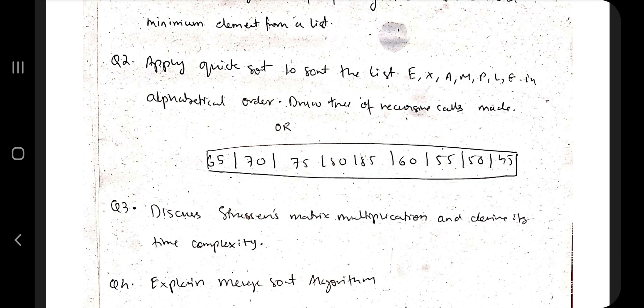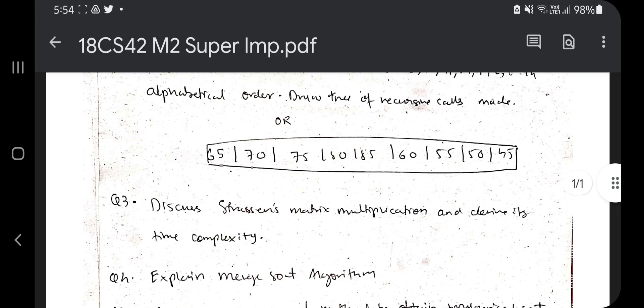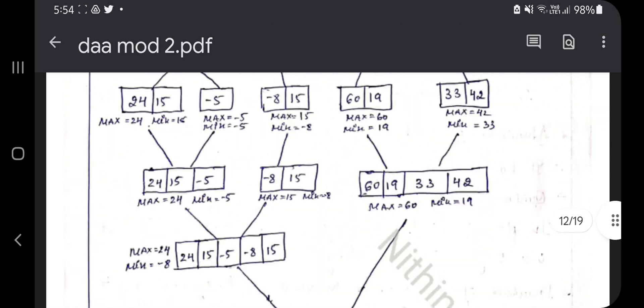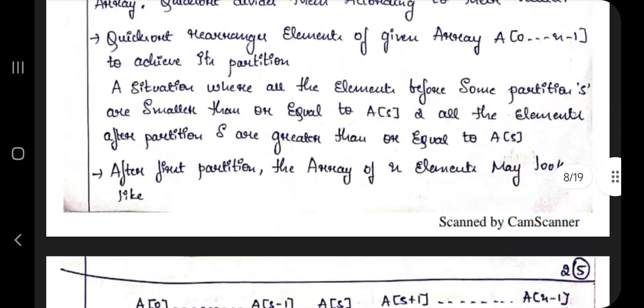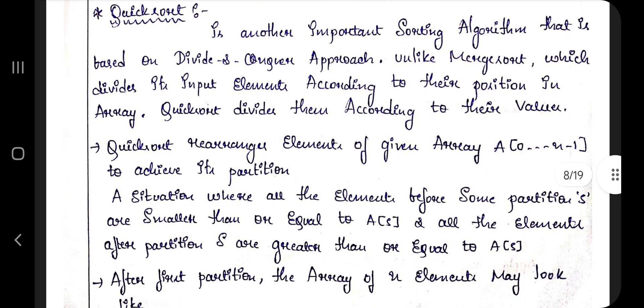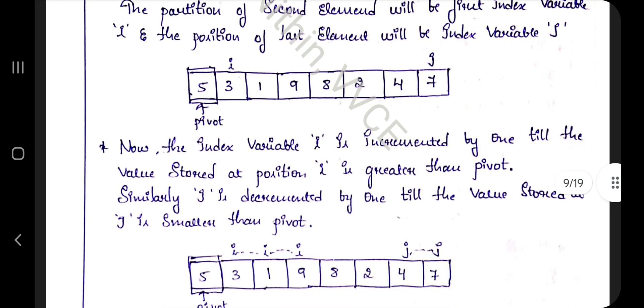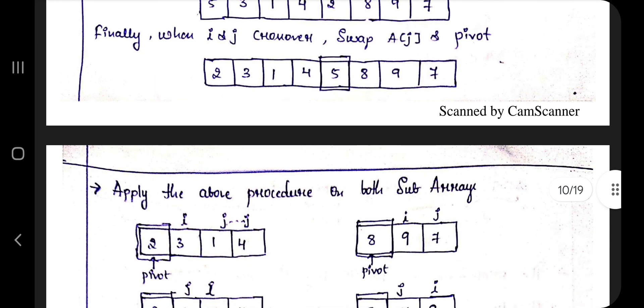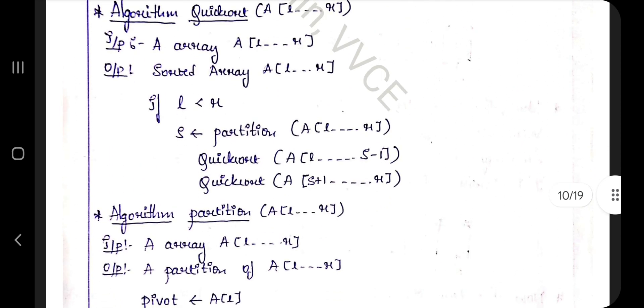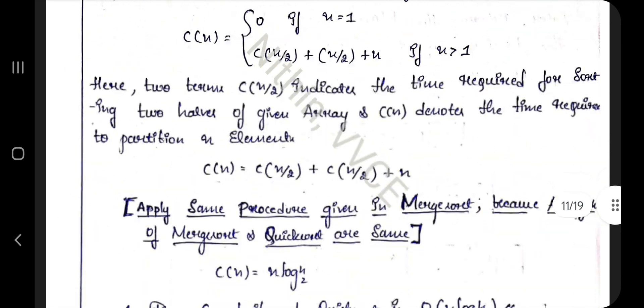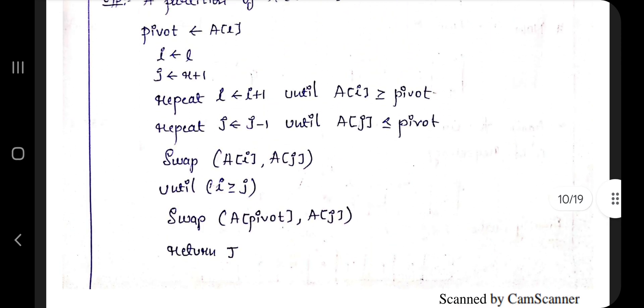The quicksort is presented on page number 18. The theory part is given with an example explaining what is pivot point and how the iterations happen. You need to know the algorithm and explain in your own words. There are two things: quicksort and partition algorithm - both you have to write. Analysis is not important but you can write to increase your chances for more marks.